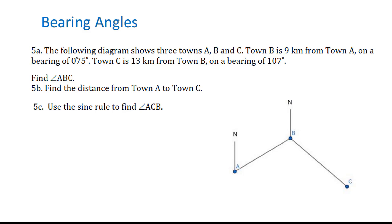Let's go to number five. This problem is about bearing angles. The following diagram shows three towns A, B and C. Town B is 9 km from town A, so this distance is 9, on a bearing of 75 degrees. Town C is 13 km from town B on a bearing of 107 degrees, so this distance is 13 km and this angle is 107 degrees.